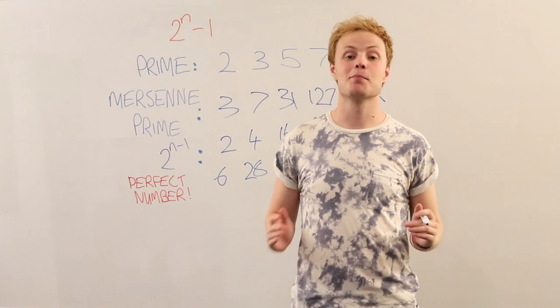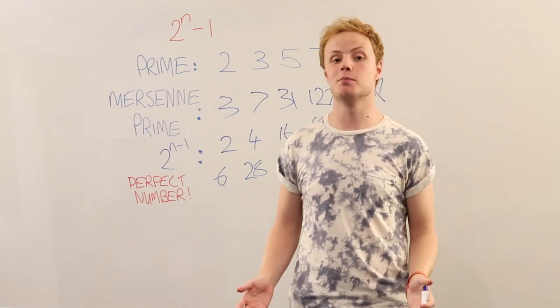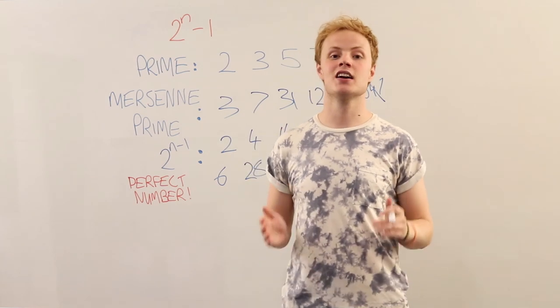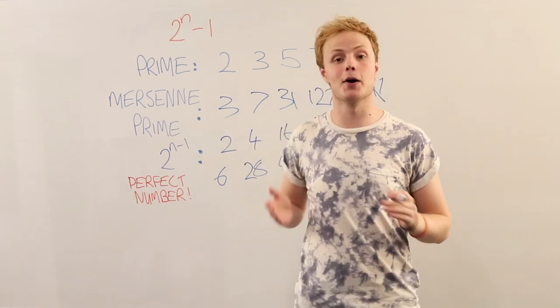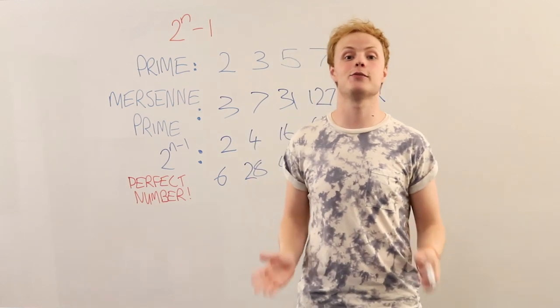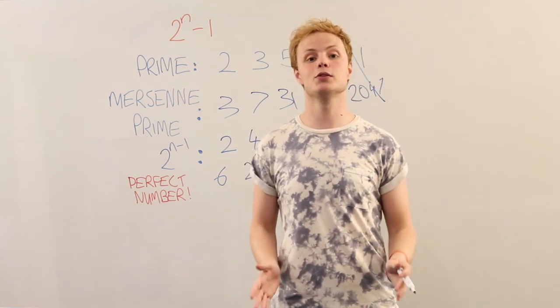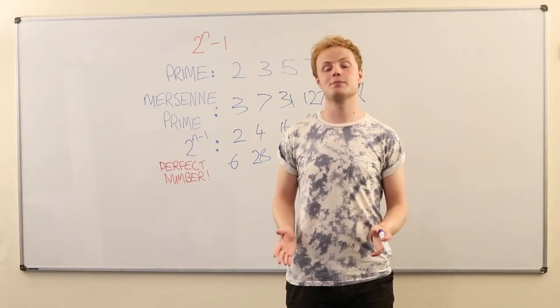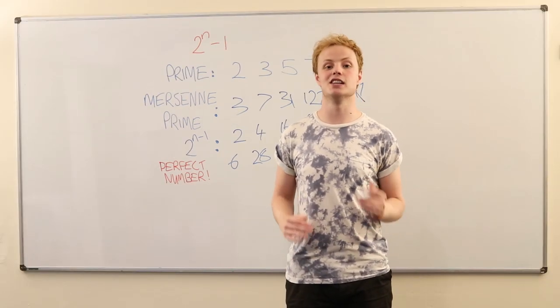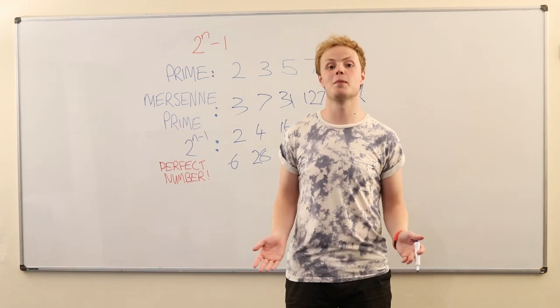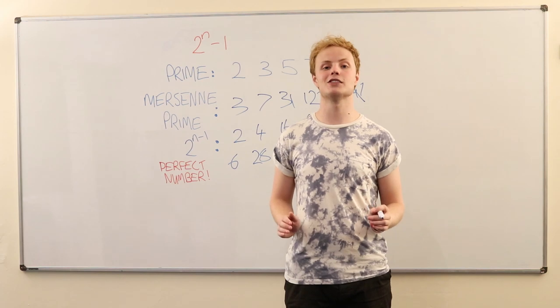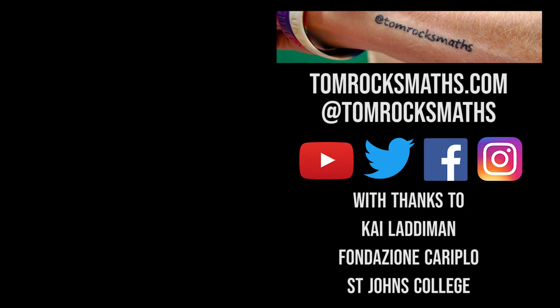So there we have it. We've seen perfect numbers, we've seen Mersenne primes, and we've seen a connection between the two over 2,000 years apart. Now, we've only found 50 of these Mersenne primes so far, and that means we have 50 perfect numbers. And we still don't know for sure whether we're going to find any more of them. Now, unfortunately, most of these perfect numbers are a bit too big to be on your lottery ticket or to fit on the back of your football shirt. So they might not ever be your favourite numbers, but they'll always hold a special place in the heart of maths. Thank you.